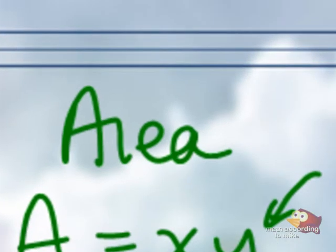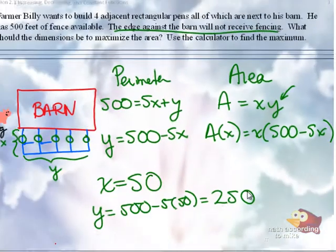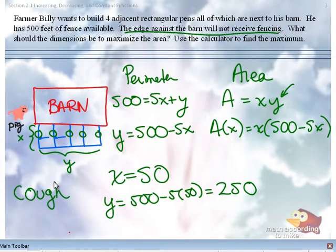We're assuming of course that his barn is at least 250 feet wide to begin with, or long. Otherwise, well the pig already got out over there so that's okay. When are you going to do... The area is not 250.